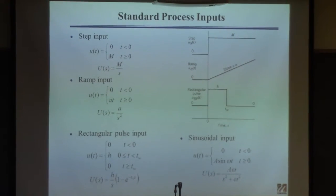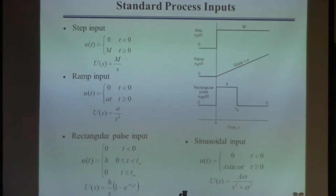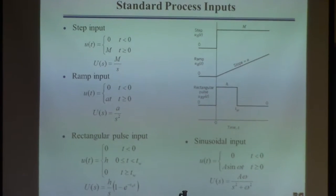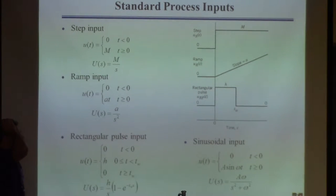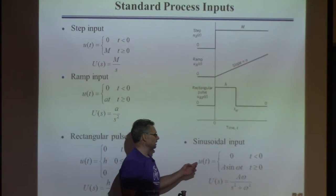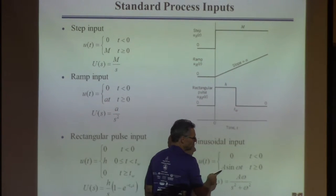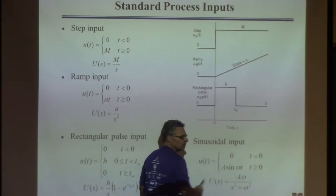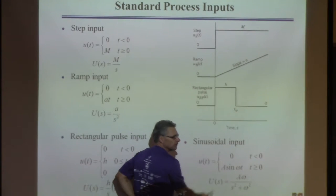We use this pretty frequently to represent something that changes temporarily. Sometimes we use a sinusoidal input. You could have cosine or sine. Let's say the input is 0 until time 0, and then equal to sine with amplitude A and frequency omega.